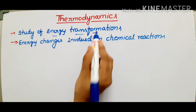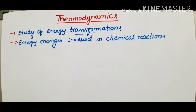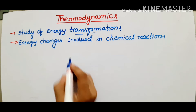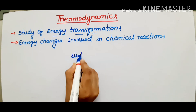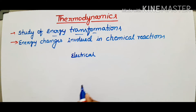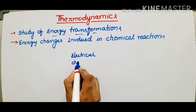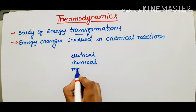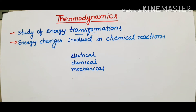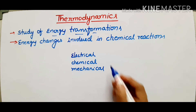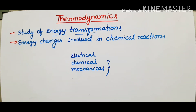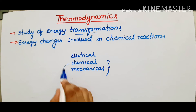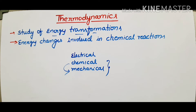What is energy transformation here? So what types of energies do we have regularly? We have electrical energy, potential energy, chemical energy, mechanical energy, and so many more. Energy transformations include things like electrical energy converting to chemical energy, or chemical energy converting to mechanical energy — like a bike starter or a bus running.